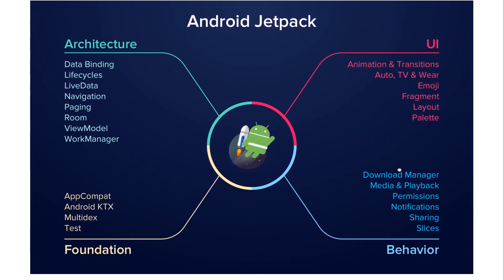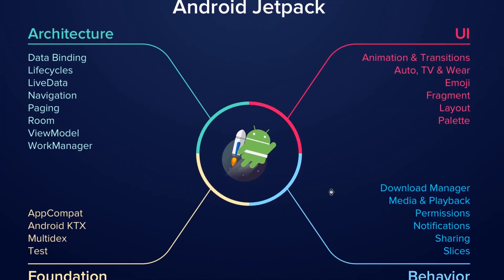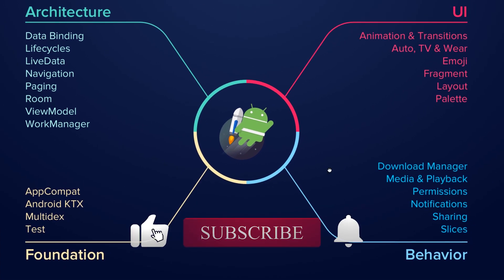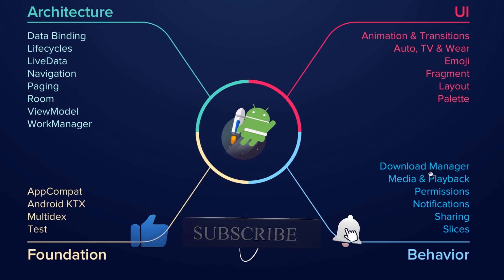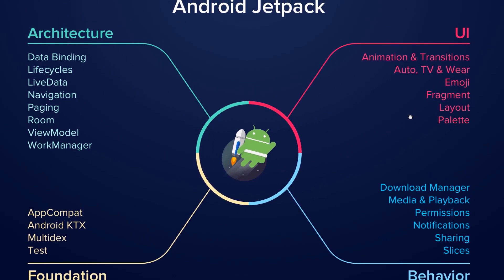So Android Jetpack is divided into four components. The first is the architecture component, which includes data binding, lifecycles, live data, navigation, paging, room, view model, and work manager.